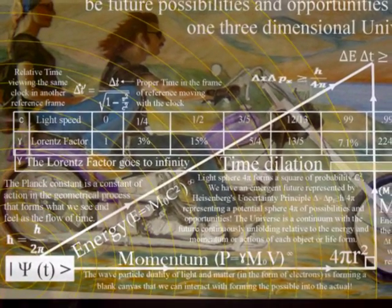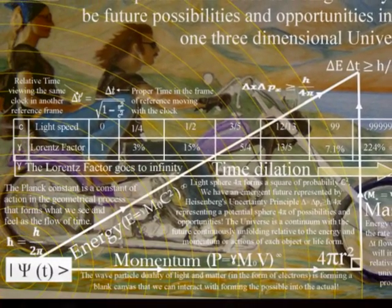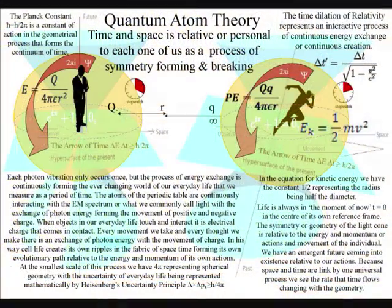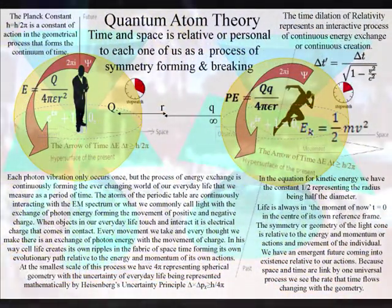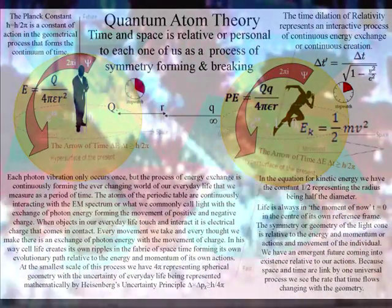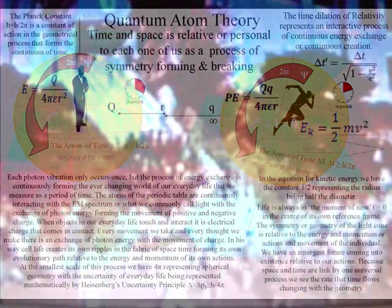This theory takes the dynamic interactive process of the general theory of relativity and extends it to our everyday life, explaining a universe that is continuously coming into existence relative to the energy and momentum of our own actions.